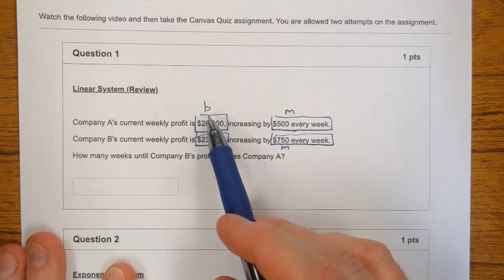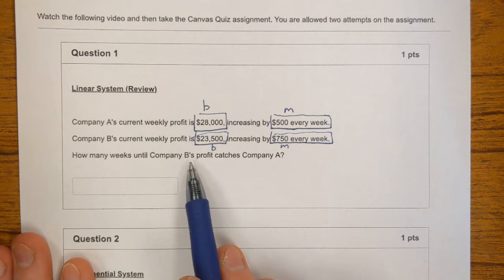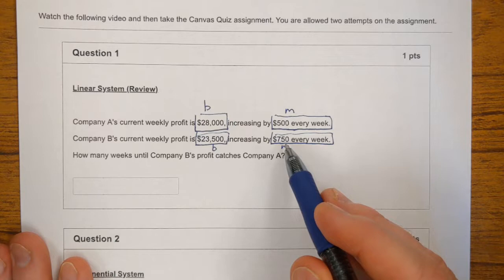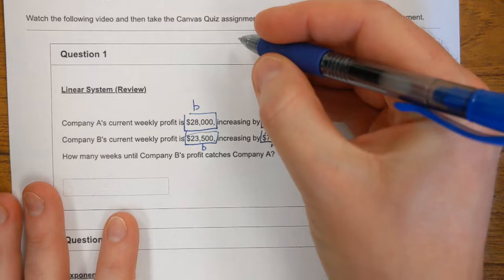It increases by $750 every week. That is its slope. So notice we have two different companies here, each with their own linear growth. We're comparing how many weeks until company B's profit catches company A. Well, notice company B is making less money right now. But because it has a higher slope, eventually it's going to catch up because it's gaining more every week. How many weeks is that going to take?